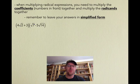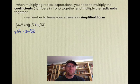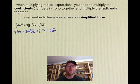Our first example is a binomial times a binomial, so we use FOIL. 4√2 times √7 is 4√14. 4√2 times negative 5√14 is negative 20√28. Next we get 3√7, and then 3 times 5√14 gives negative 15√14. Now we combine like terms: 4√14 and negative 15√14 gives us negative 11√14.